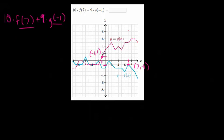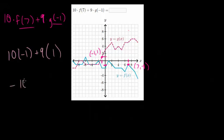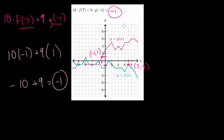Plugging these in we get 10 times negative 1 plus 9 times positive 1, so you get minus 10 plus 9, which is negative 1. So the number we put in the box here is negative 1.